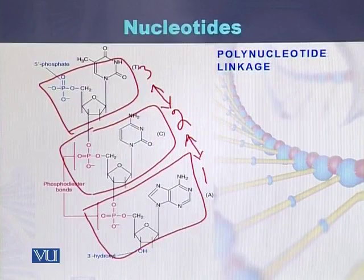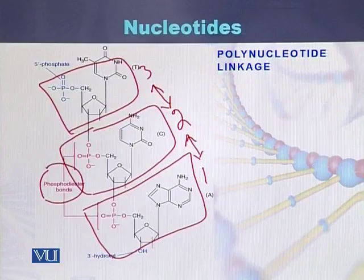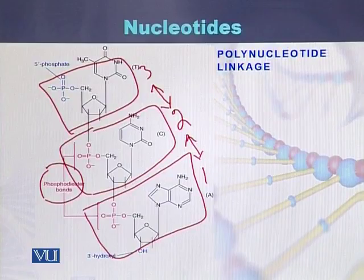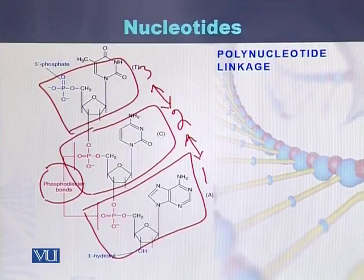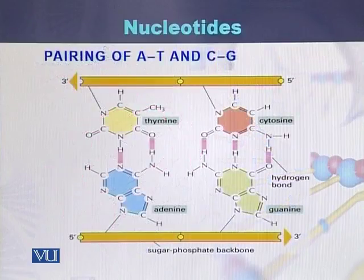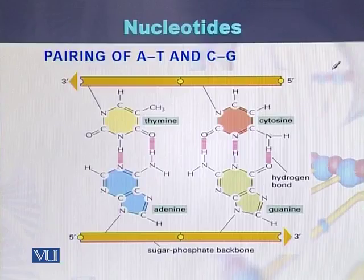The linkage between nucleotide one and nucleotide two is called a phosphodiester bond. We can say that the nucleotides within the structure of DNA are joined by a bond, and the name of that bond is the phosphodiester bond.